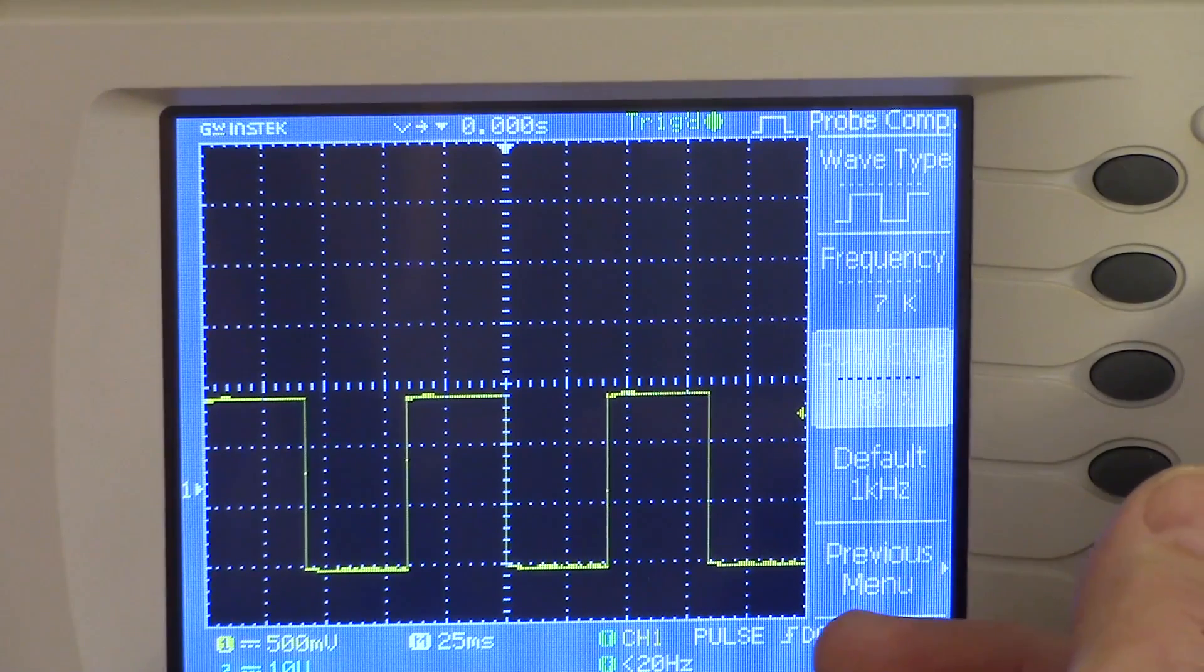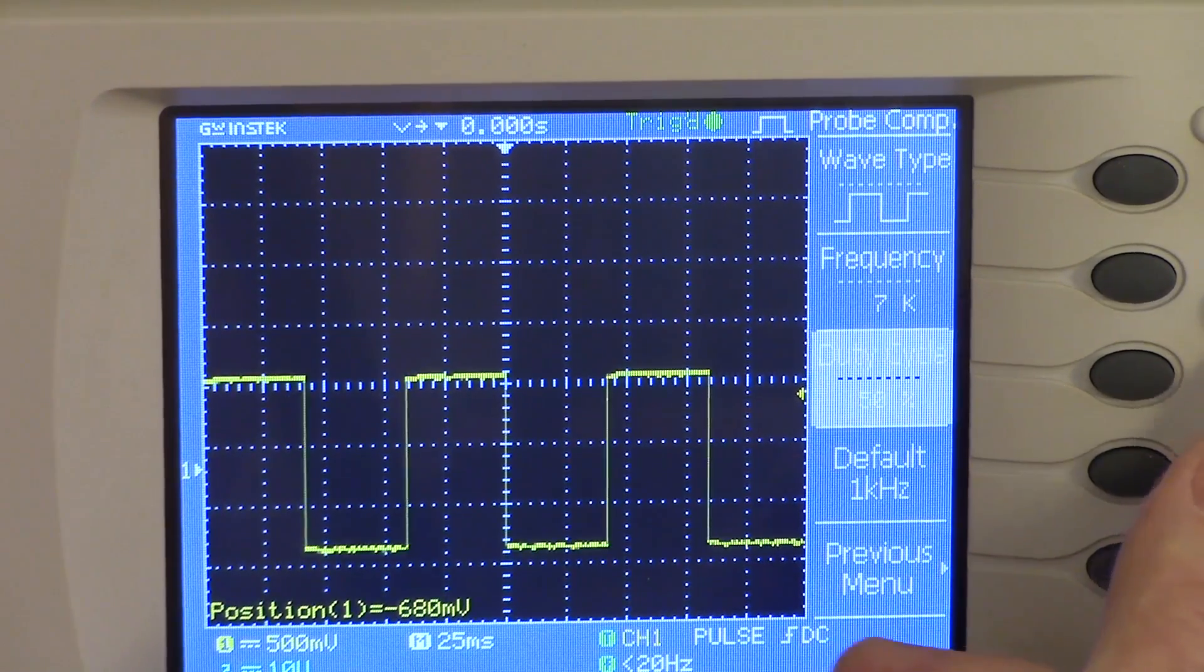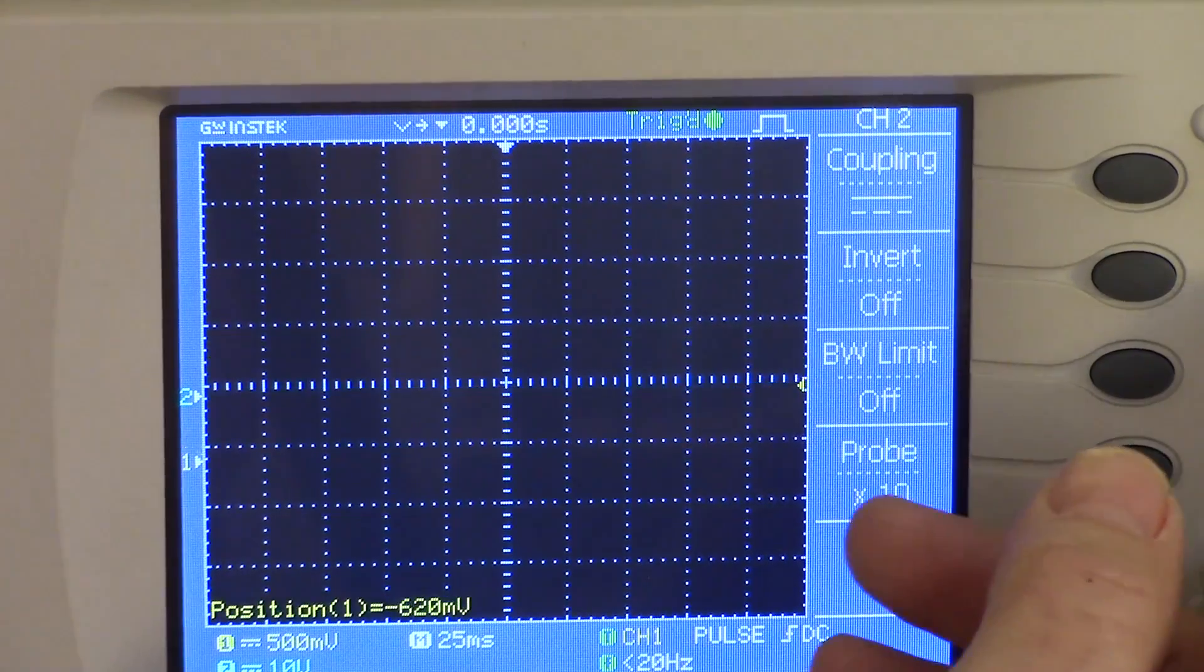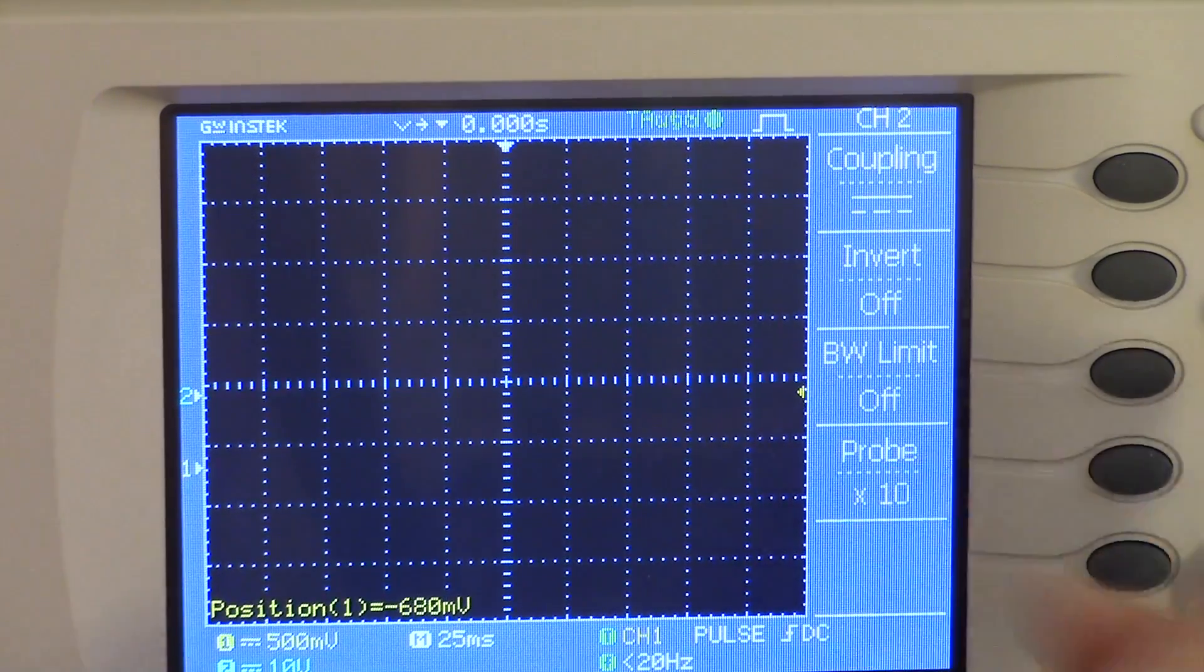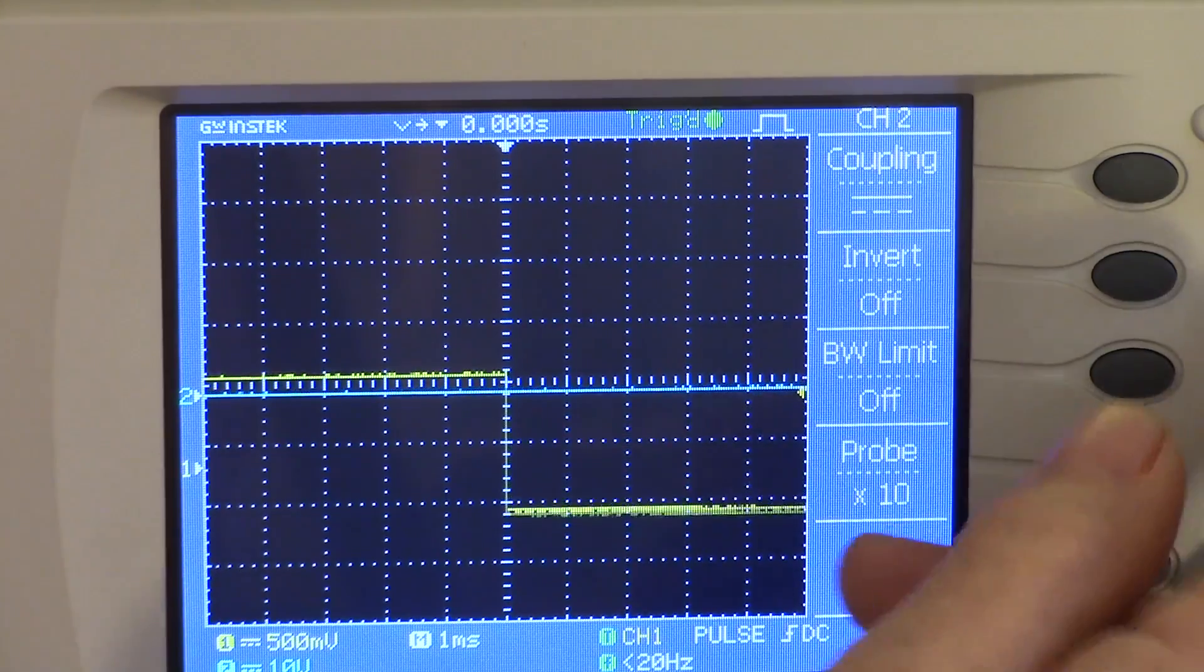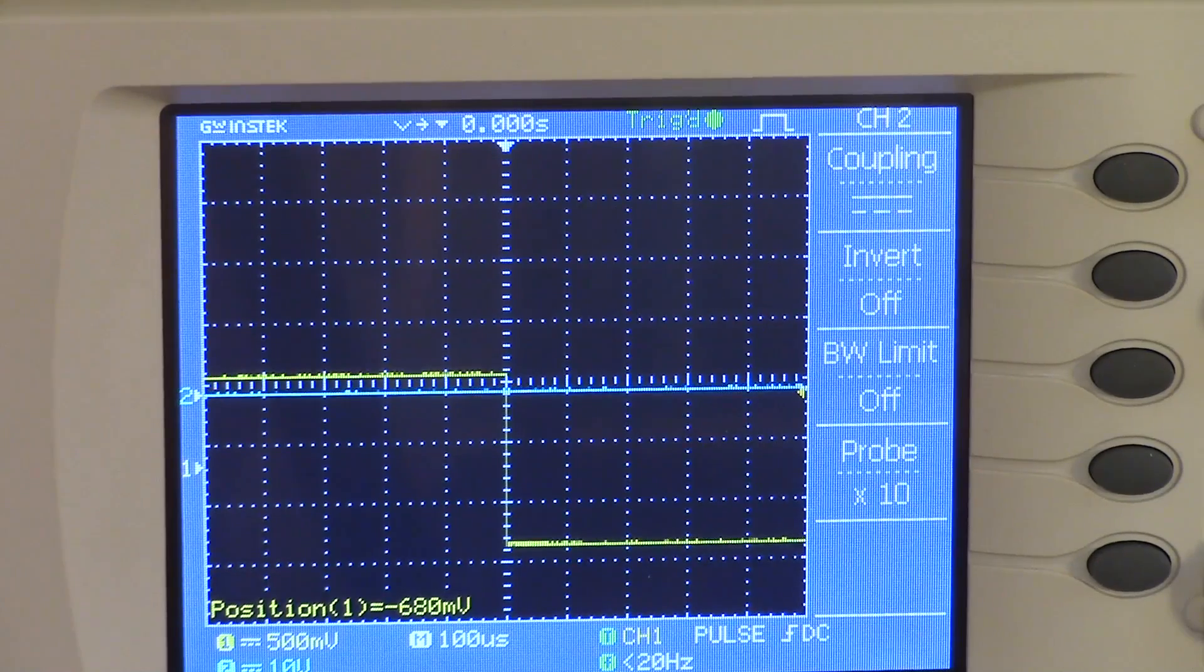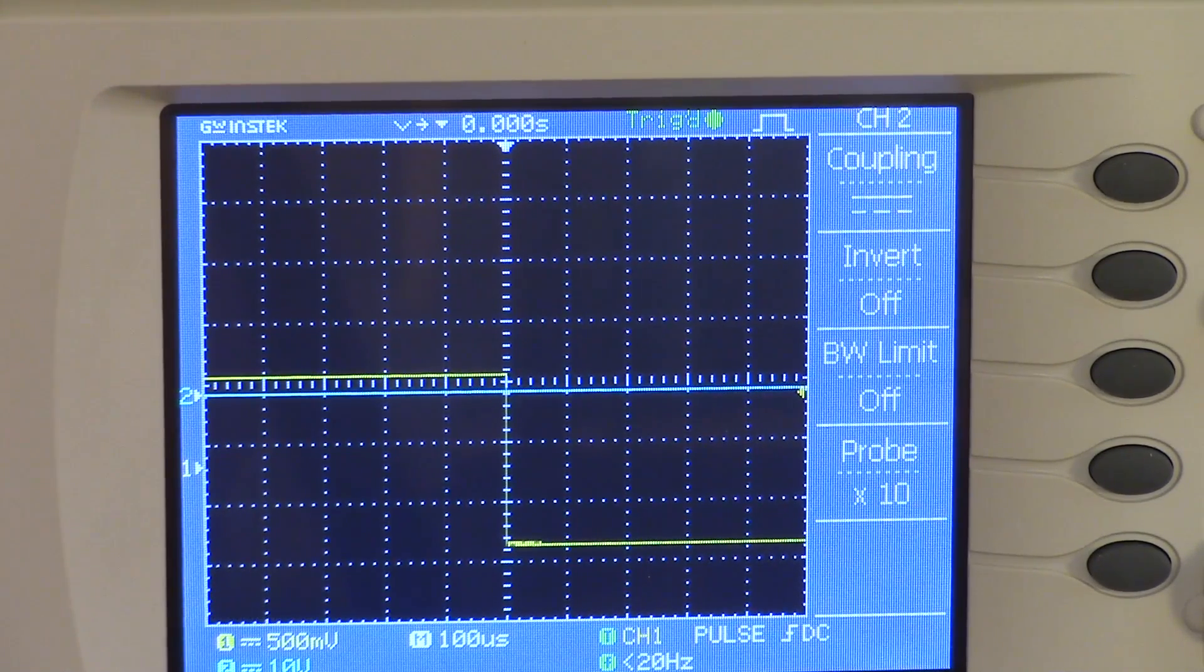I also didn't really care for the vertical position knobs. You can see, as you move the thing around, it gets all bouncy. Everything, the signals just disappear for a while. Sometimes they're flashing. It's not very attractive. It's not a problem, but it's sort of a nuisance.